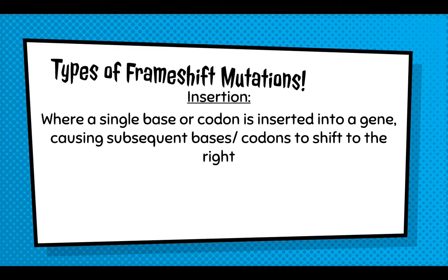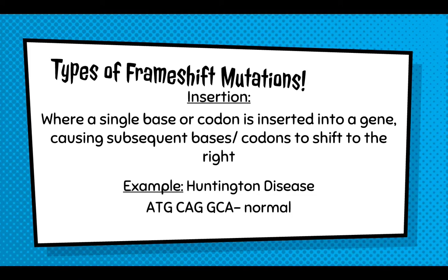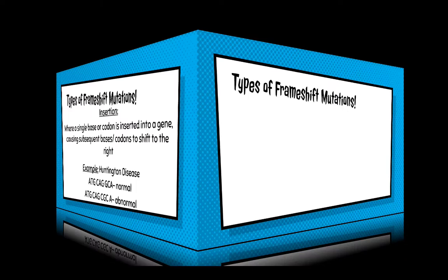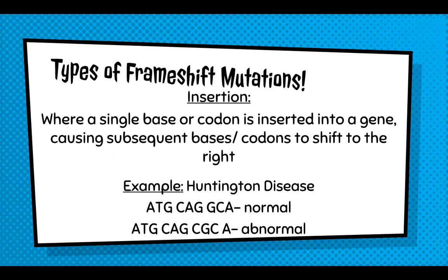For example, with Huntington's disease, the normal sequence has three codons: ATG, CAG, and GCA. The abnormal sequence inserts a C in front of that GCA codon at the end, and that causes the entire reading frame — the entire rest of that protein — to be formed incorrectly.